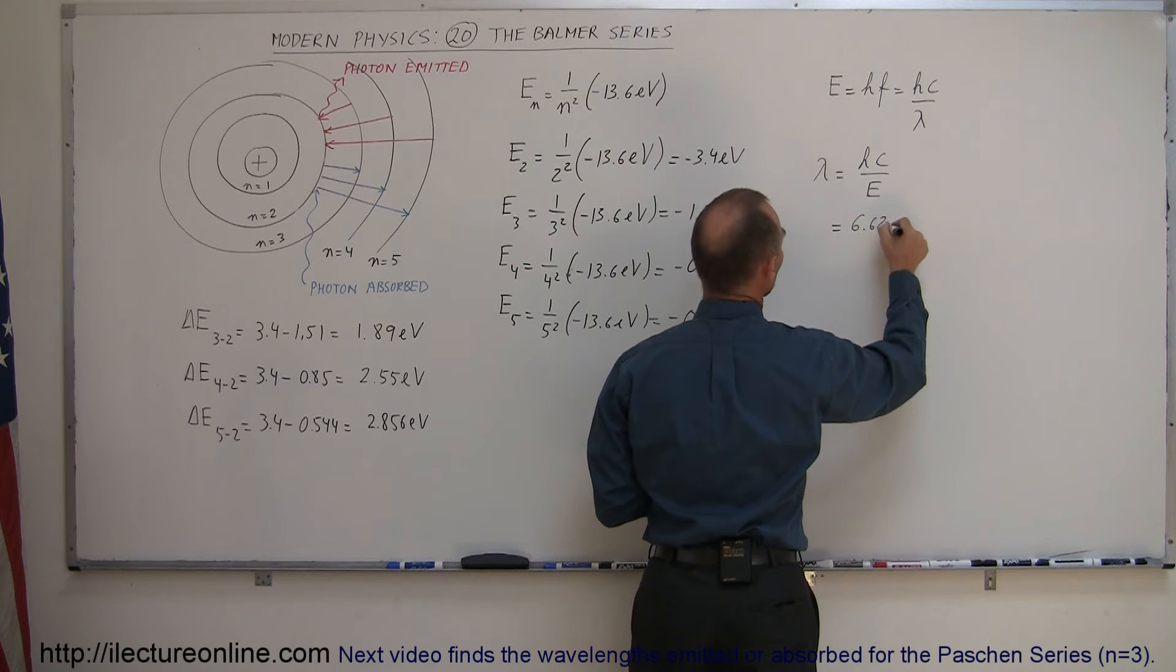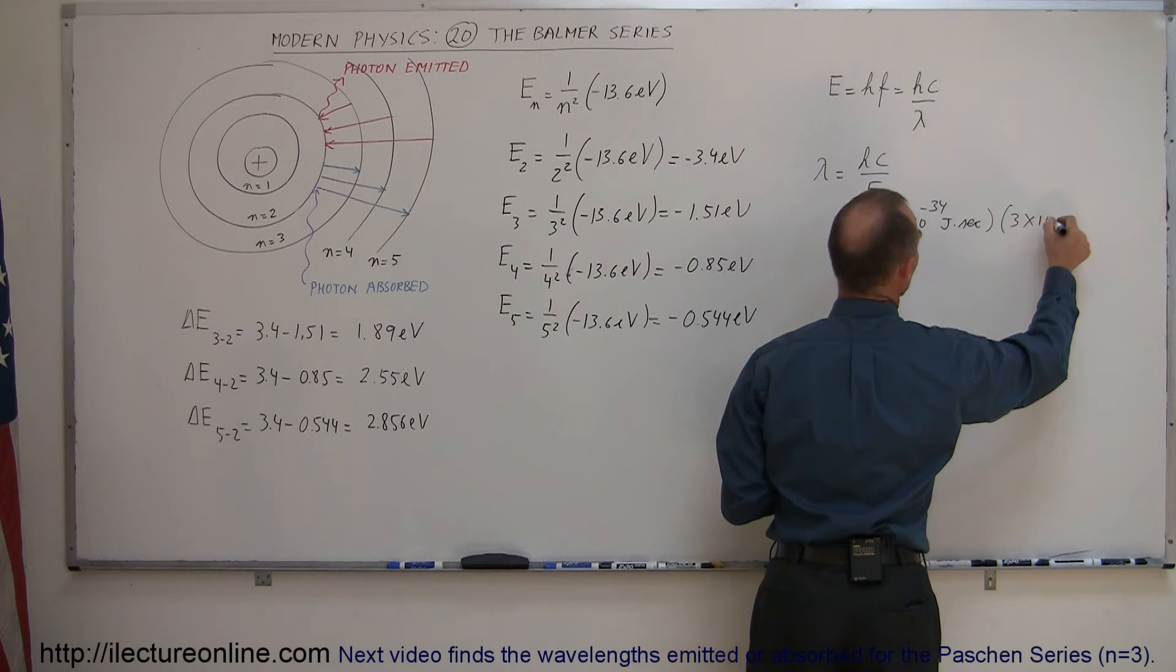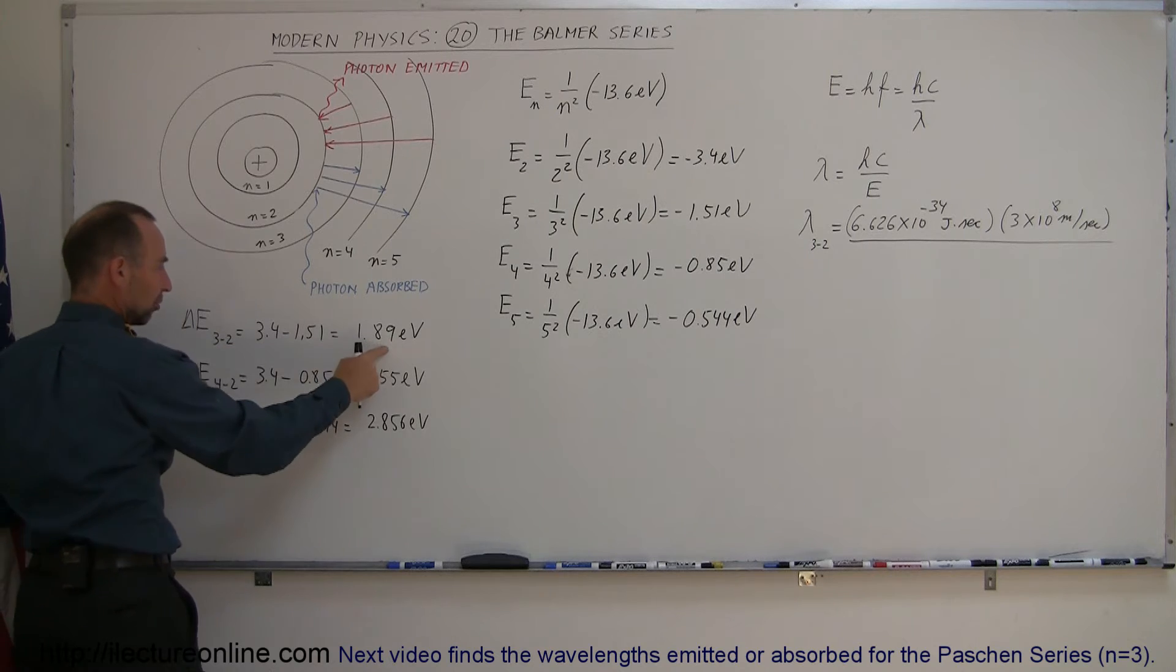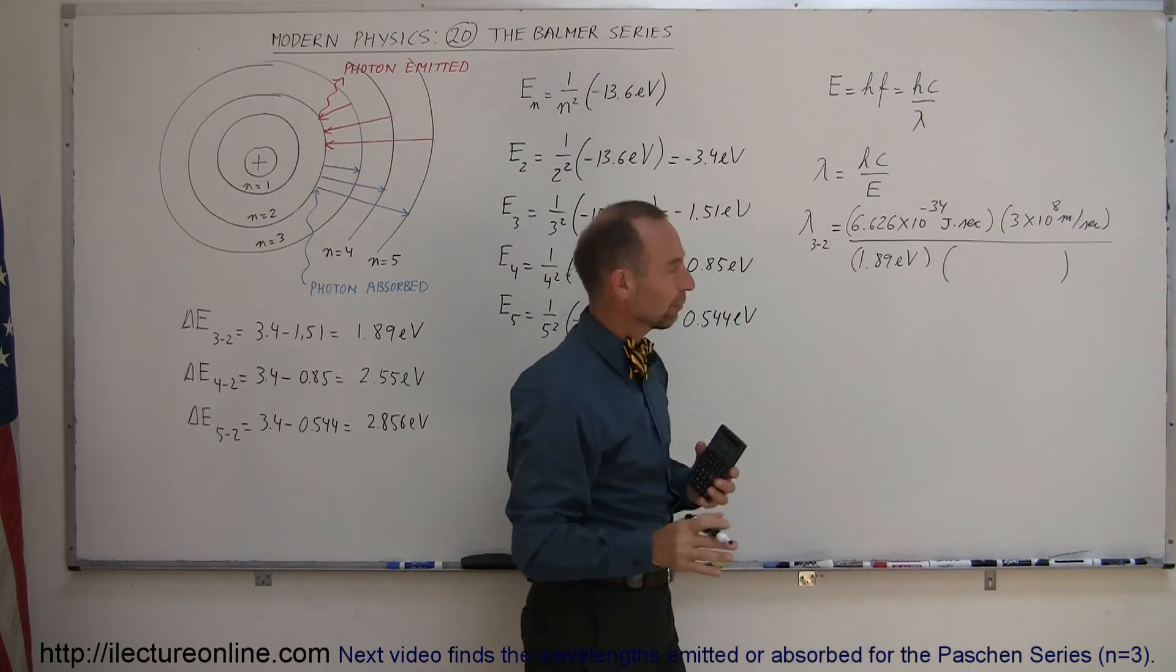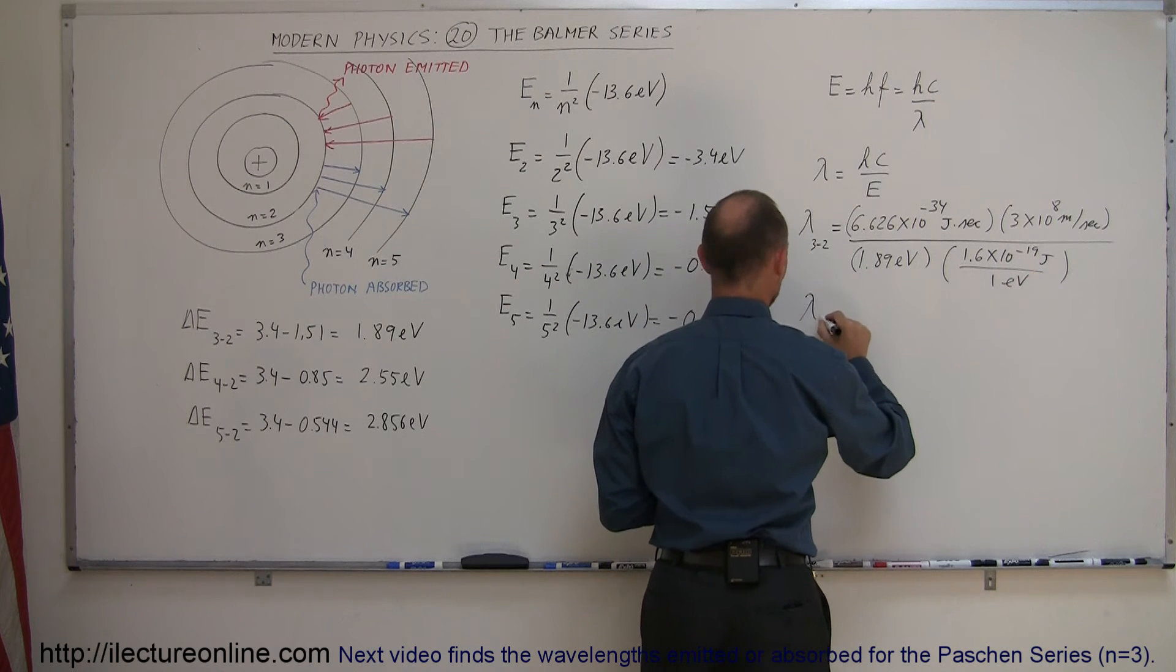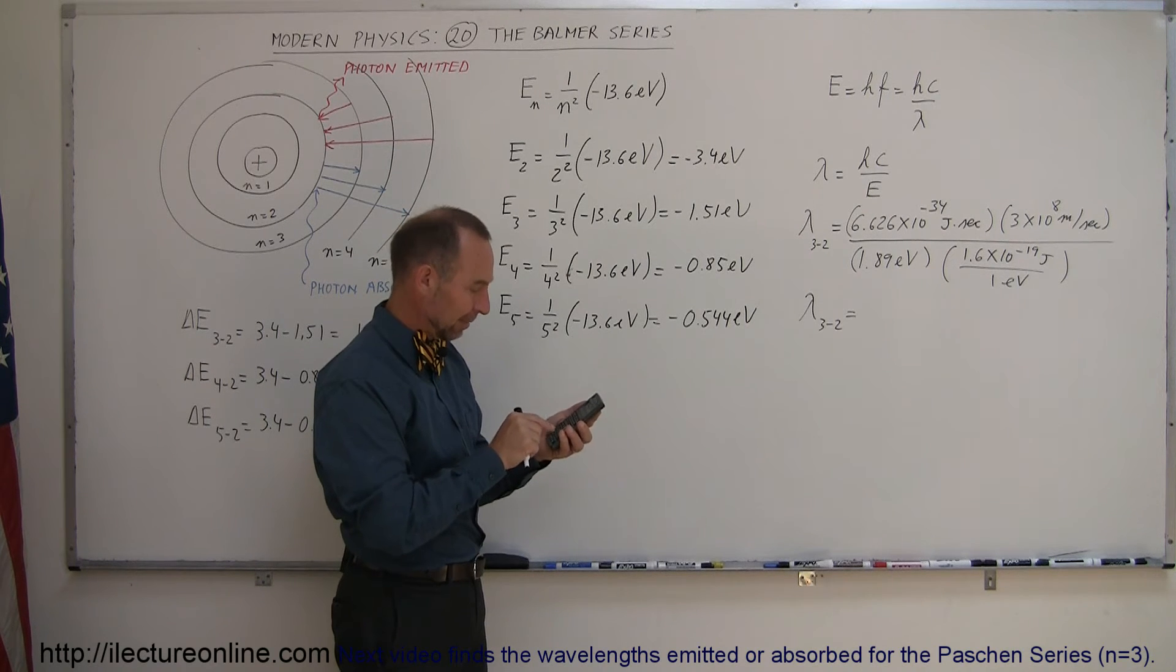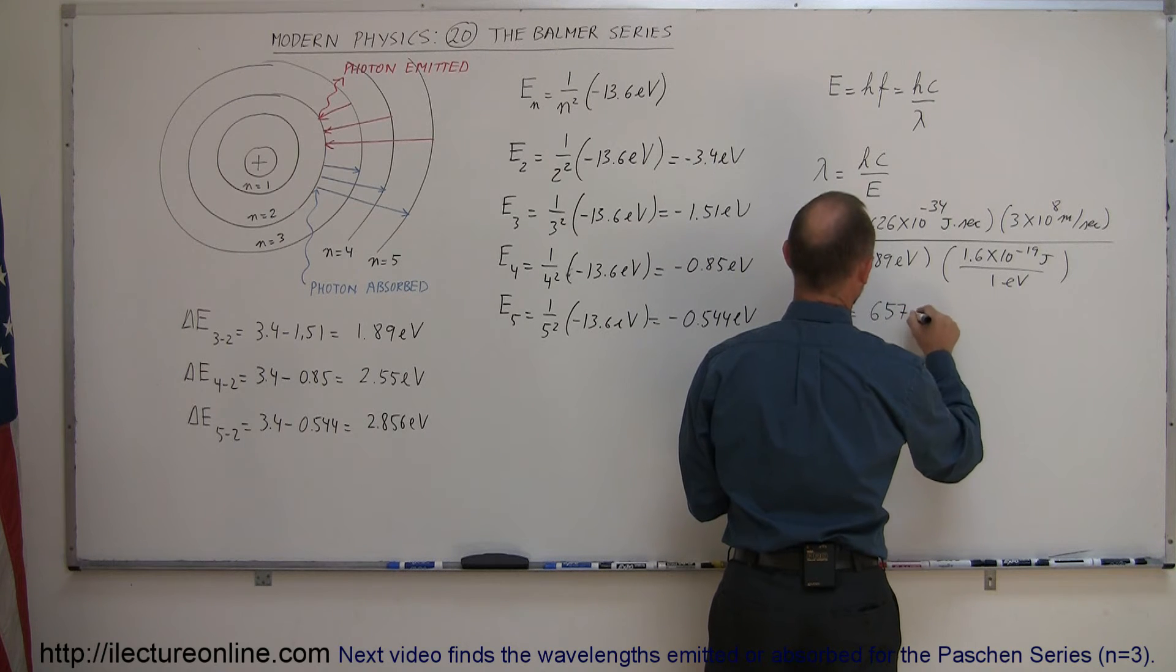So h being 6.626 times 10 to the minus 34 joules times seconds, multiply it times the speed of light, 3 times 10 to the 8 meters per second, and dividing it by the energy difference. Now what we're looking for is the energy between 3 and 2 in the corresponding wavelength of that photon. So the energy difference is 1.89 electron volts, and then we have to convert that from electron volts to joules, so 1.6 times 10 to the minus 19 joules per one electron volt. So it's 657.3 nanometers.